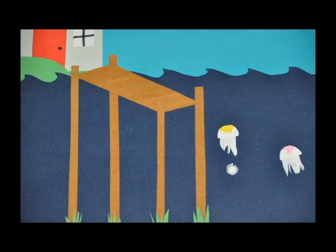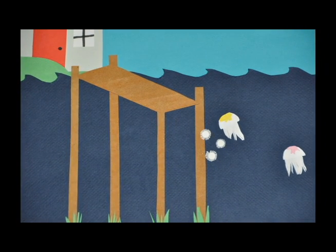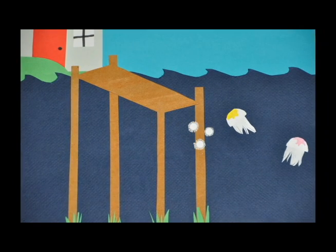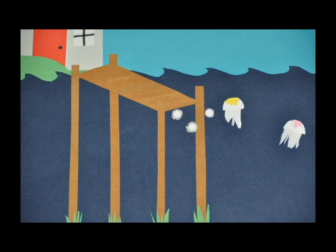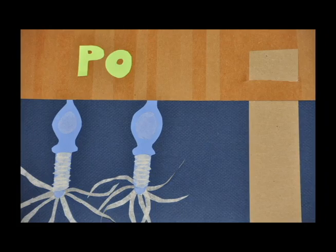The Planula will float around for a day until it can find a nice place to stay. Smooth rocks and shells are really ideal, but bulkheads and docks have the same feel. Onto this surface the Planula attaches, grows into a polyp to bud off new batches.